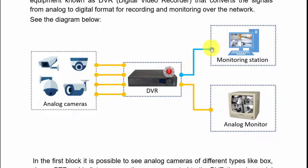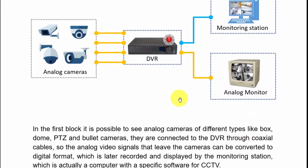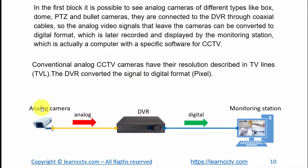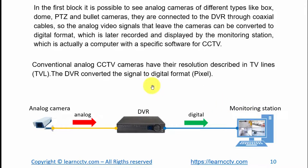Leaving the DVR, the signal travels over a network cable or UTP cable — it's digital now. The image comes to your computer and you can view it in software. You can also still view it using an analog cable directly connected to a monitor. From the DVR you can also send the information to the internet and use a monitoring station software.